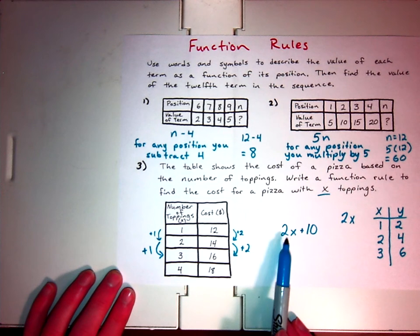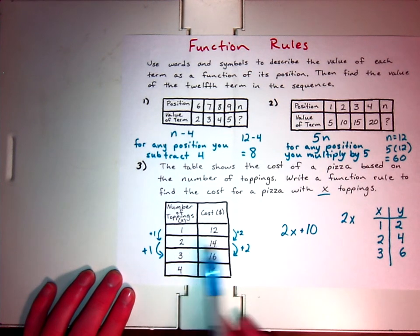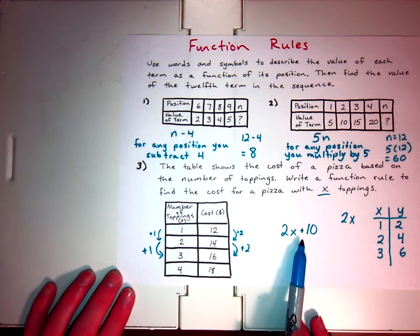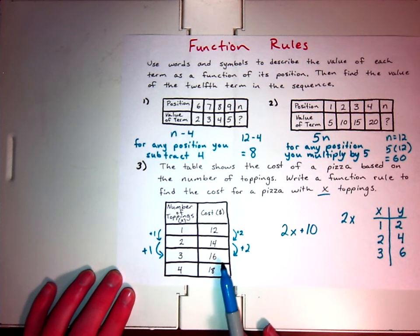So let's test it and see if it is true. 1 times 2 is 2, plus 10 is 12. 2 times 2 is 4, plus 10 is 14. 3 times 2 is 6, plus 10, that equals 16. 4 times 2 is 8, plus 10 is 18. So we see it's working.